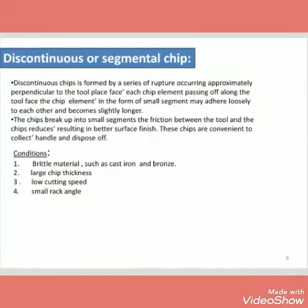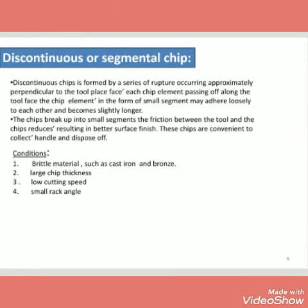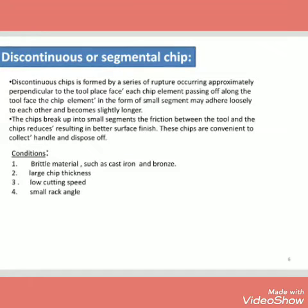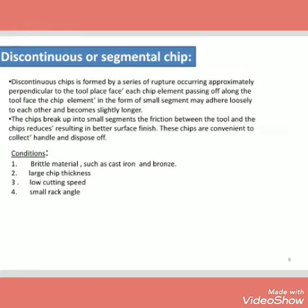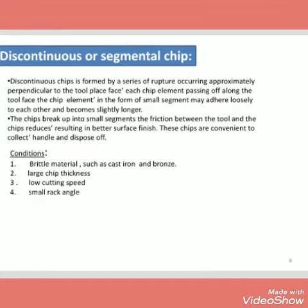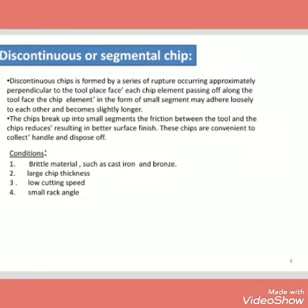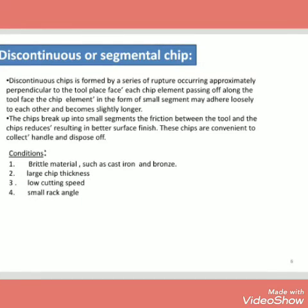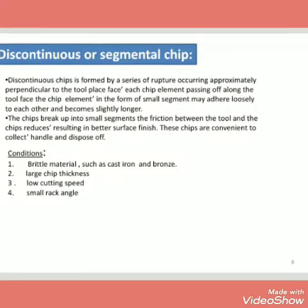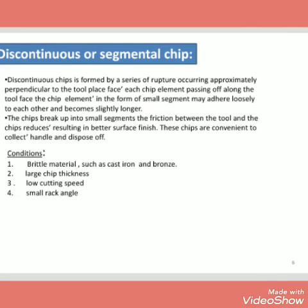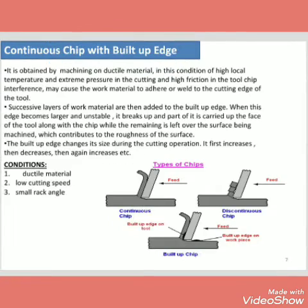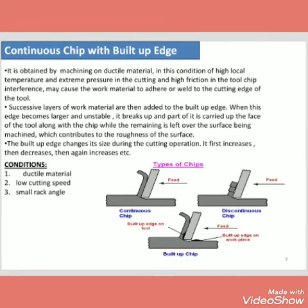Next is the discontinuous or segmental chip. Discontinuous chips are formed by a series of ruptures occurring approximately perpendicular to the tool face. Each chip element passes off along the tool face; the chip elements in the form of small segments may adhere loosely to each other and become slightly longer. The chip breaks up into small segments, which is why this is called discontinuous or segmental chips. The conditions for this are brittle material such as cast iron or bronze, large chip thickness, and low cutting speed.